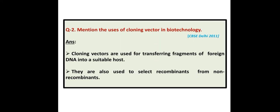Mention the uses of cloning vector in biotechnology. Answer: Cloning vectors are used for transferring fragments of foreign DNA into a suitable host. They are also used to select recombinants from non-recombinants.